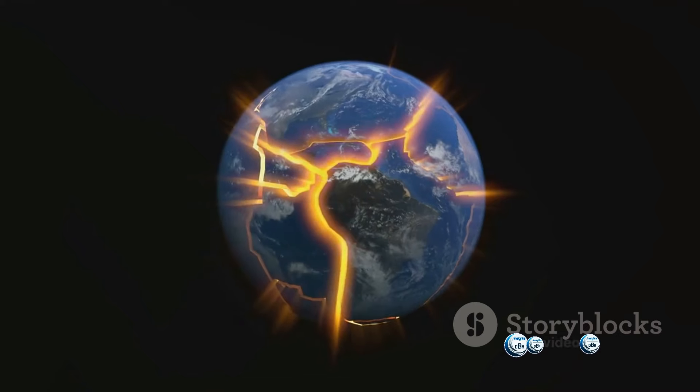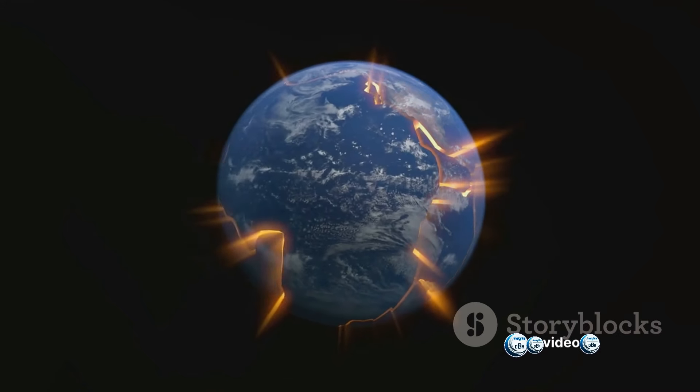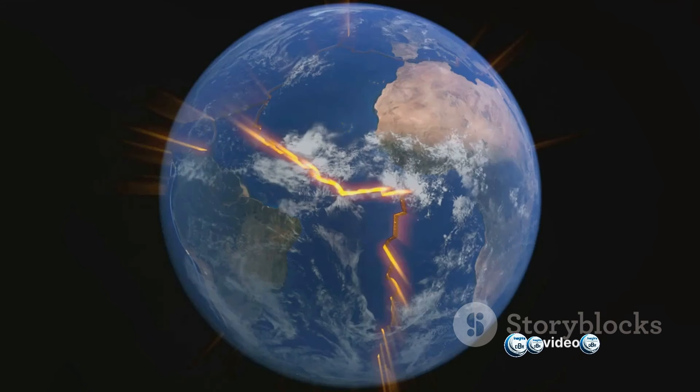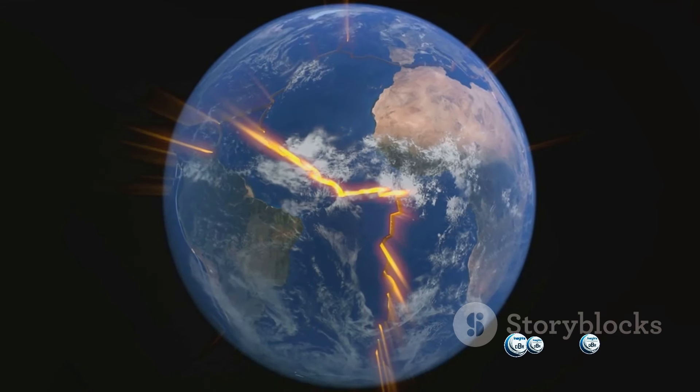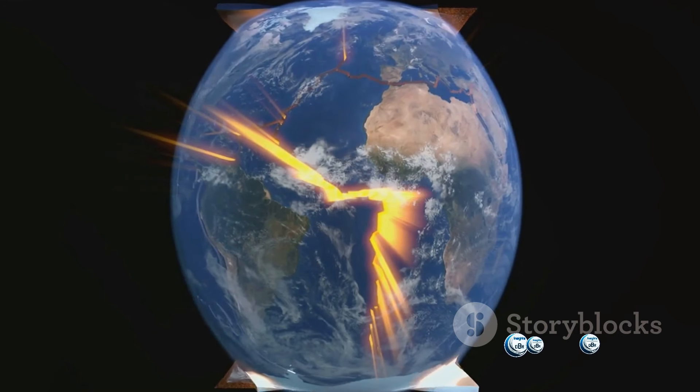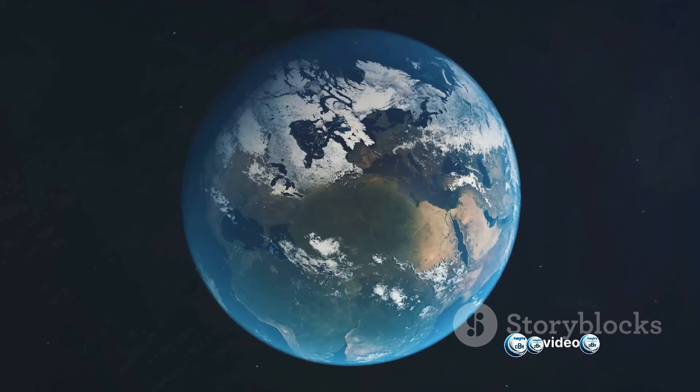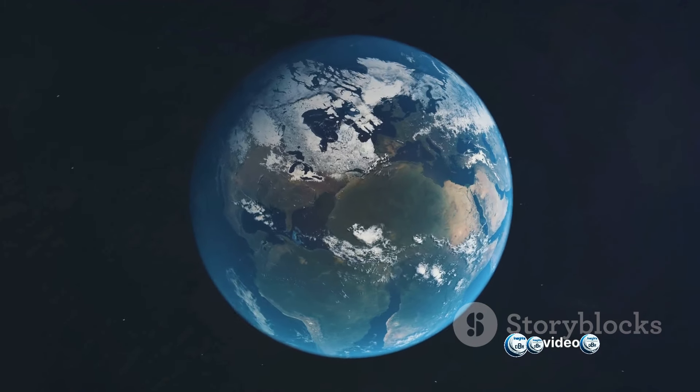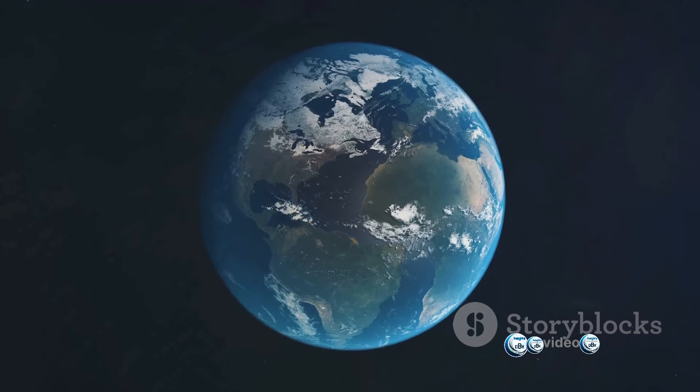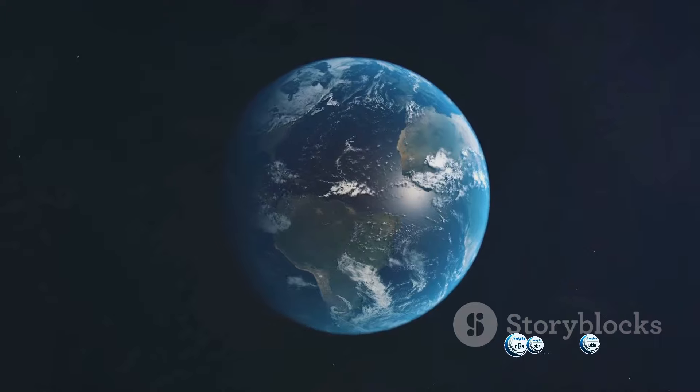Earthquakes, volcanic eruptions, mountain formation, all these are orchestrated by the unseen hands of plate tectonics. Now let's take a step back, back to a time when all landmasses on Earth were clumped together into a single supercontinent named Pangaea. That was around 300 million years ago. Over the eons due to the ceaseless motion of tectonic plates, Pangaea fragmented into the continents we recognize today. But that's not the end of the story.